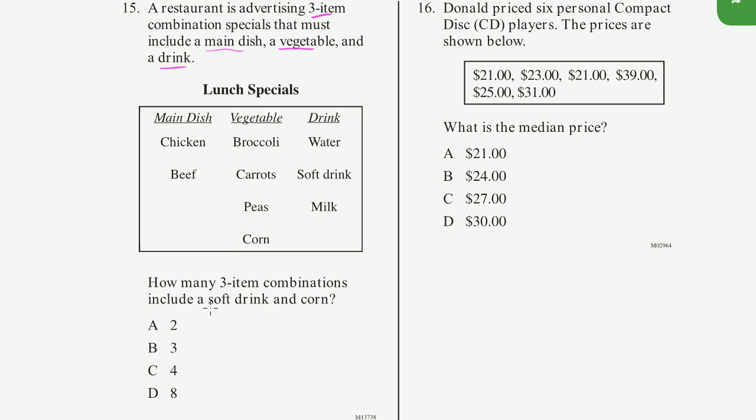So they're already picking two of the buckets for us. It includes a soft drink, and it has to include a corn. So they've essentially already picked our choices from this bucket and that bucket right there. And they're saying, how many combinations are left?